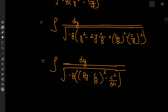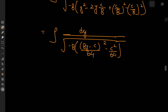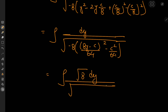Simplifying, we can write this as (8y minus c)/8 squared. After taking out the square root of 8 and accounting for the differential element, we have the structure of an inverse sine function, with the expression under the root becoming c² minus (8y minus c)².